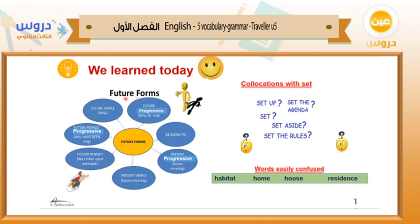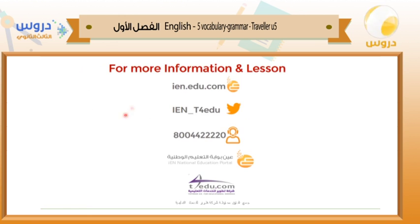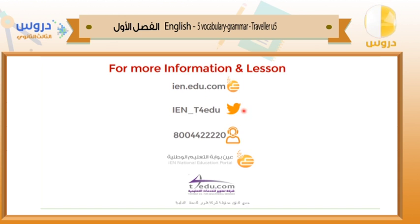What we have learned today: the forms of the future tense, collocations with the word 'set' — such as set up, set the agenda, set aside, and set the rules — and words easily confused, like habitat, home, house, and residence. Thank you for watching. I hope you enjoyed and learned something new. For more information, please visit our website or contact us via our Twitter account. If you prefer to call, the number is 800-442-2220. Thank you again — hope to see you next time. Goodbye for now.